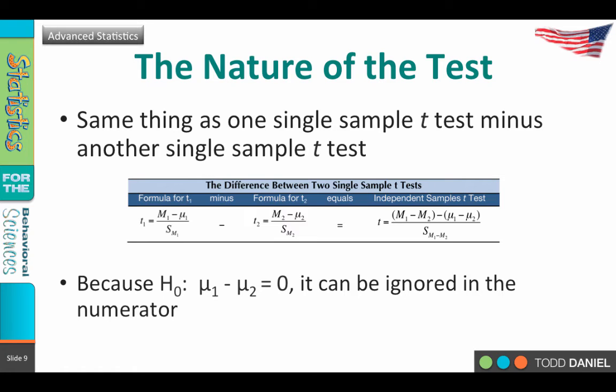But remember what we're doing with hypothesis testing — we're testing the likelihood of getting a particular test outcome if the null hypothesis is true. The null hypothesis assumes that the populations from which the two samples are drawn are the same. So if the population means are the same, mu1 minus mu2 equals zero, and it drops out of the equation. Therefore, our independent samples t-test formula becomes a little more simple.